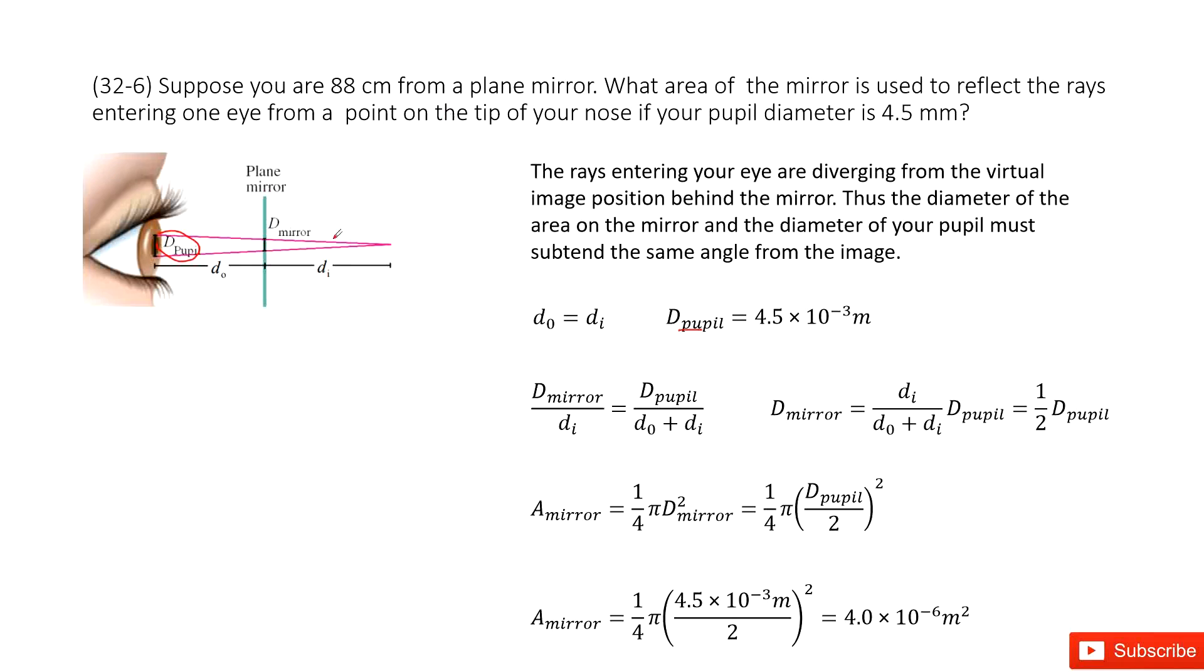We know the distance from the object to the mirror equals the distance from the mirror to the eyes, so d_o equals d_i. Now we need to find the diameter for the mirror. In this case, things become easy. We can see there are two similar triangles. Let me change color. See, this is one angle, one triangle.